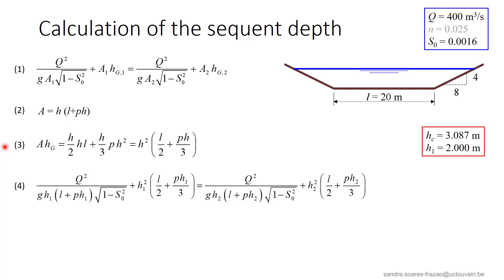Combining equations 2 and 3 into equation 1, we obtain this equation 4 here, in which finally we see that the only unknown is h2. But as this appears in different terms, we will isolate again the highest power of h2, and we obtain equation 5 that will be solved by iterations.